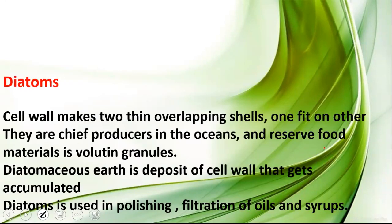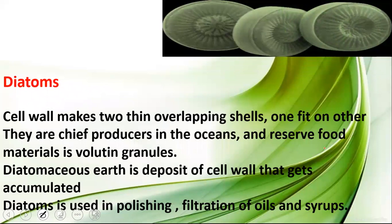Diatoms have a cell wall that makes two thin overlapping shells — one fits over the other like a soap box lid over its base. Diatoms are the chief producers in the oceans. They contain pigments chlorophyll-a and chlorophyll-c, and store food materials in the form of volutin granules.